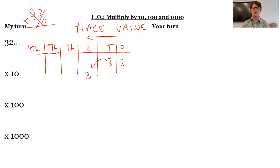The digit 2, two 1s, is going to become two 10s. And so now I need to put in that placeholder here to show that I've got no 1s. So 32 times 10 is 320.